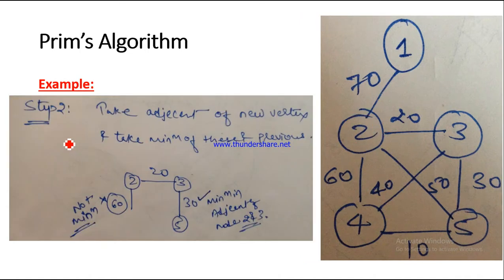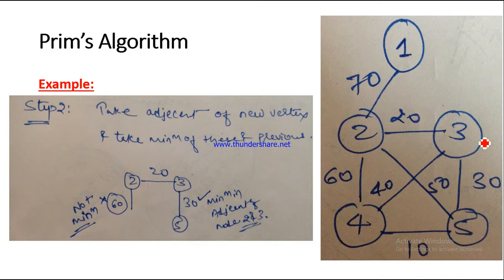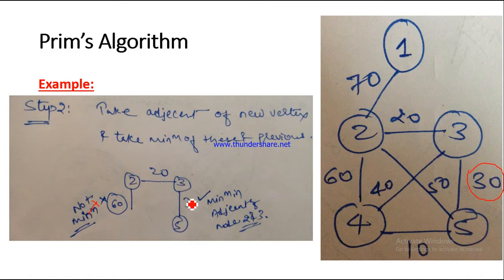In step 2, we now have nodes 2 and 3. We take the edge with the minimum cost from all adjacent edges of these nodes. Adjacent of 2 includes 2-to-1, 2-to-4, 2-to-5 (2-to-3 is already taken). Adjacent of 3 includes 3-to-4 and 3-to-5. From all available edges the minimum cost is 30, so we take that edge into our MST. Our MST now contains 3 nodes.